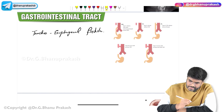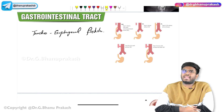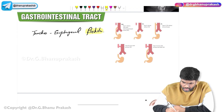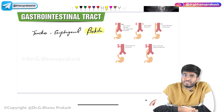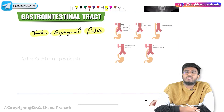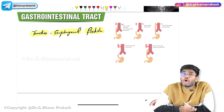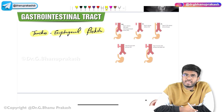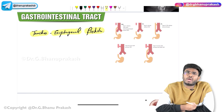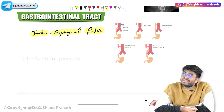What exactly is tracheoesophageal fistula? It's a congenital anomaly. A fistula is an abnormal connection between two cavities — here, between the trachea and the esophagus. So there is an abnormal connection present between the trachea and the esophagus. Why does such an abnormality happen?